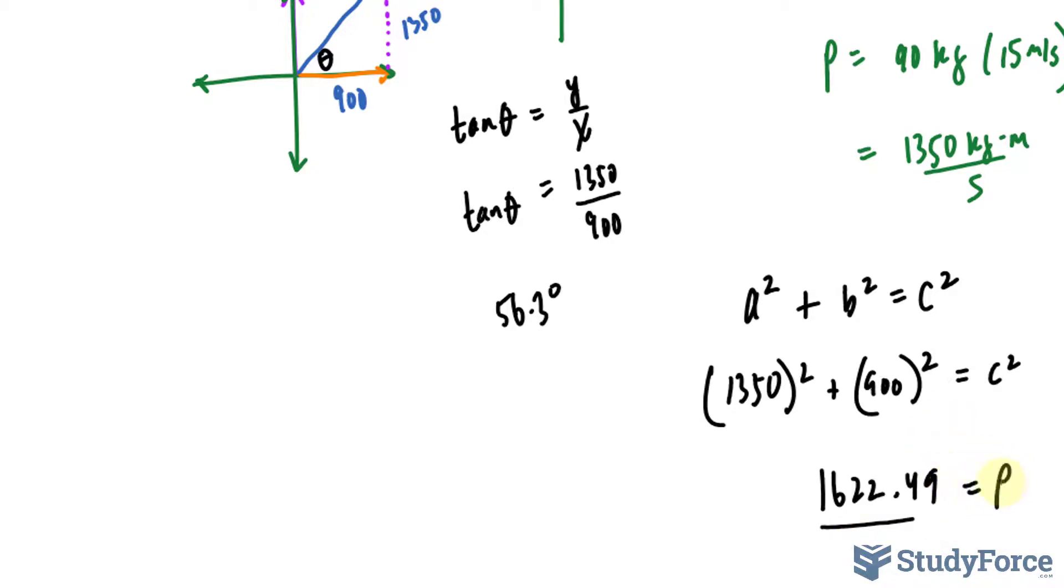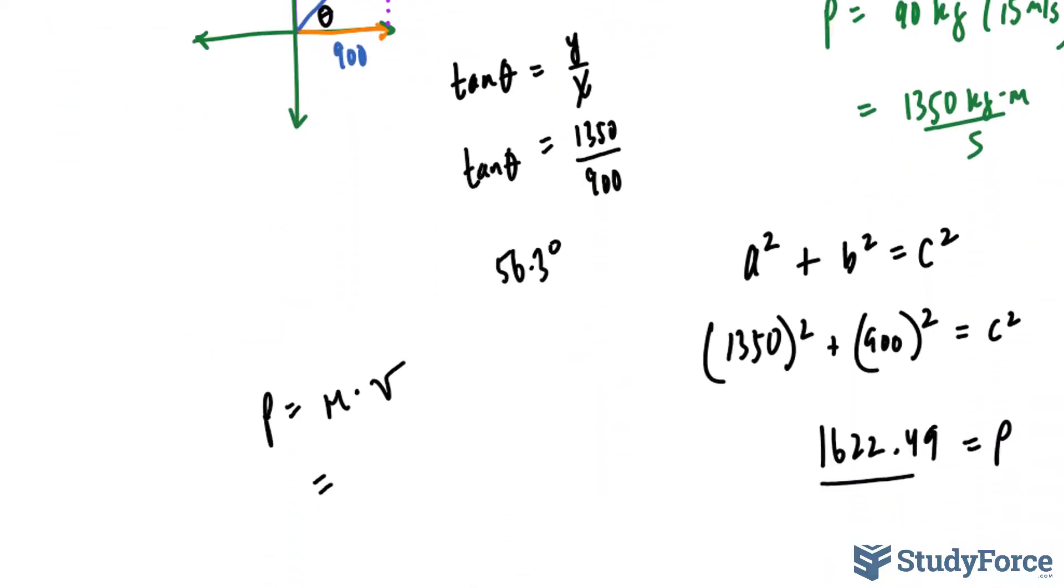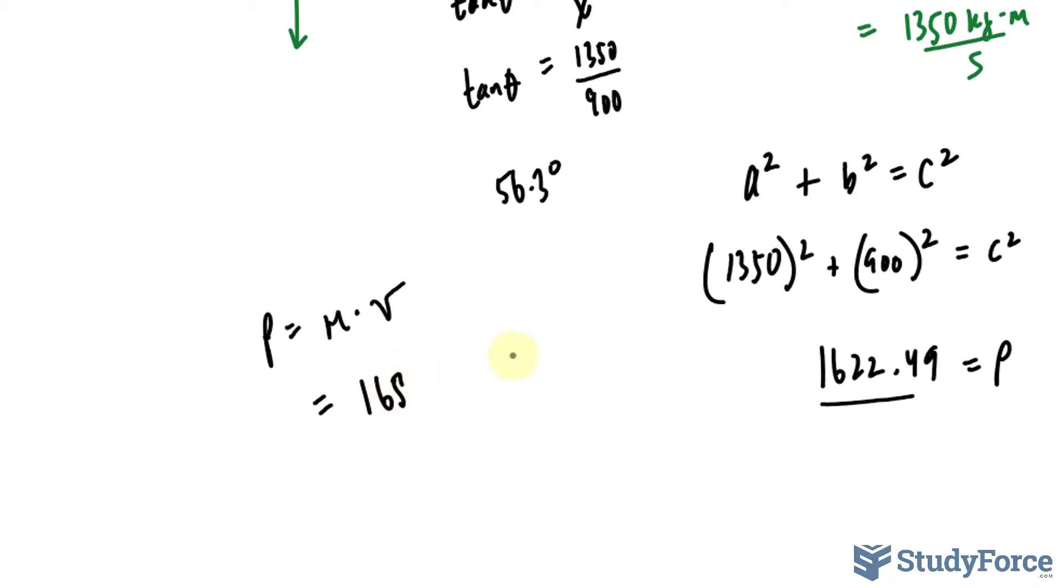Okay, so that's the magnitude. That's p of them being stuck together and remember, p equals m times v. The mass together is 75 plus 90. That's 165. That's in kilograms.